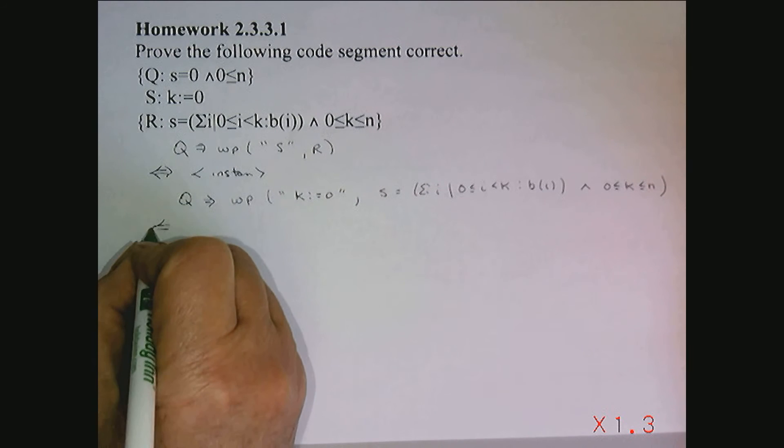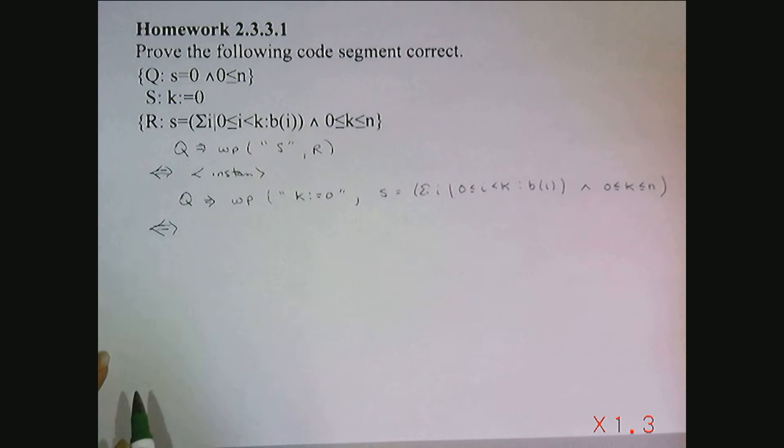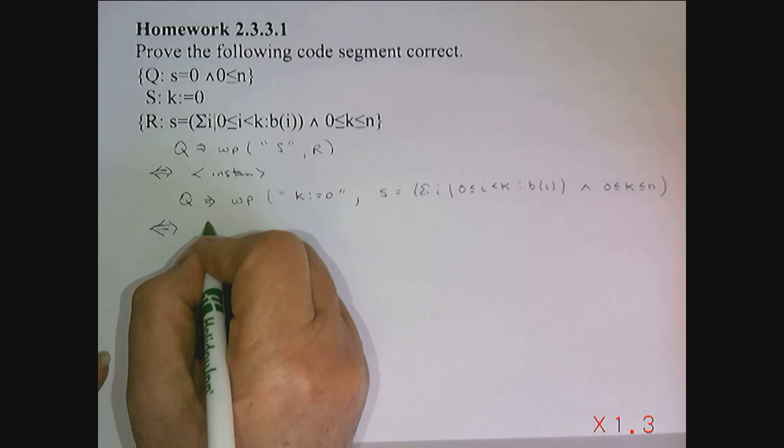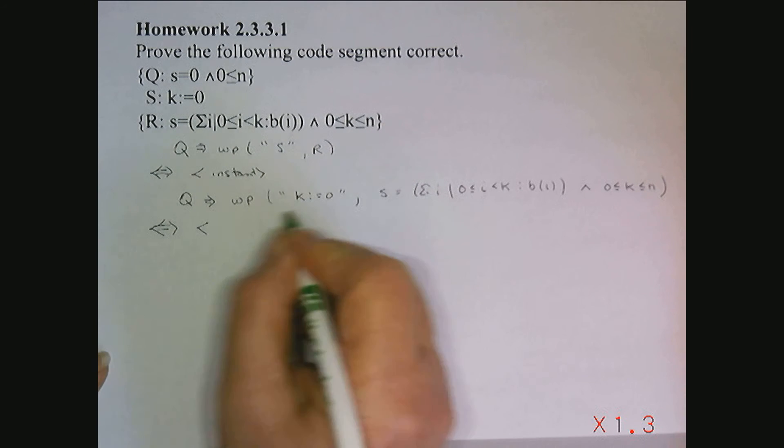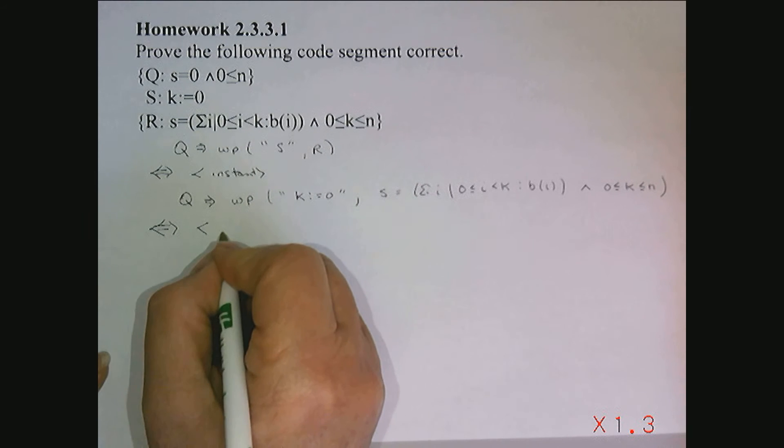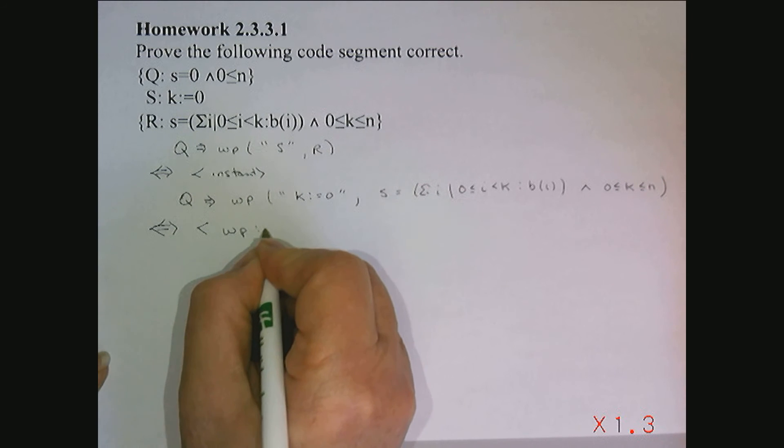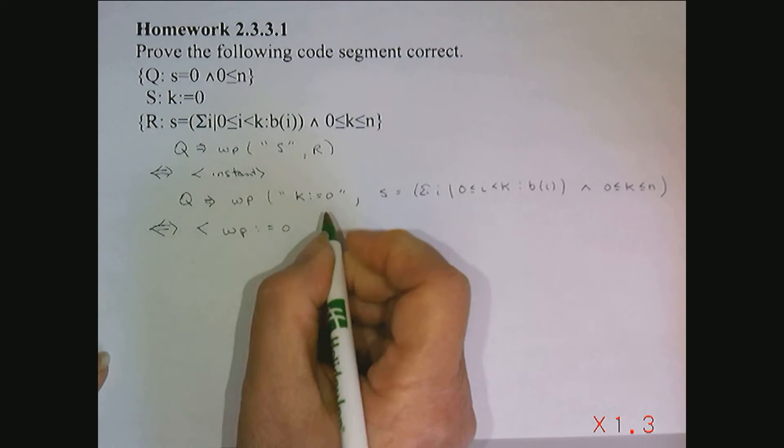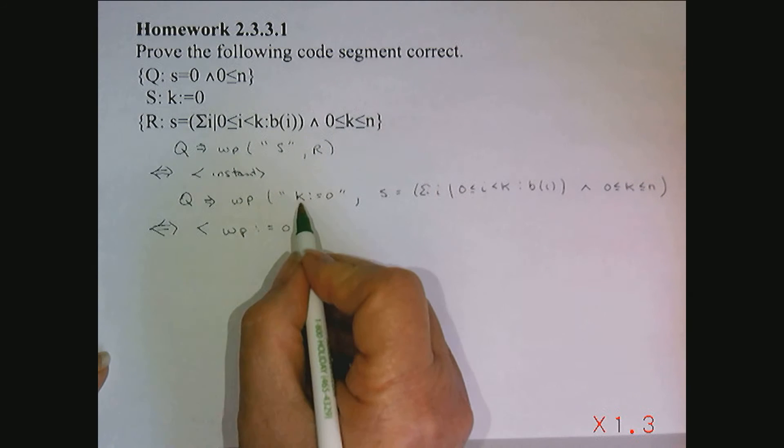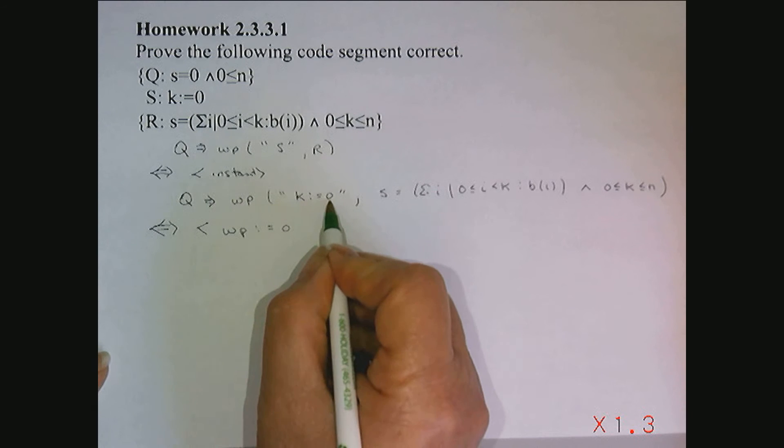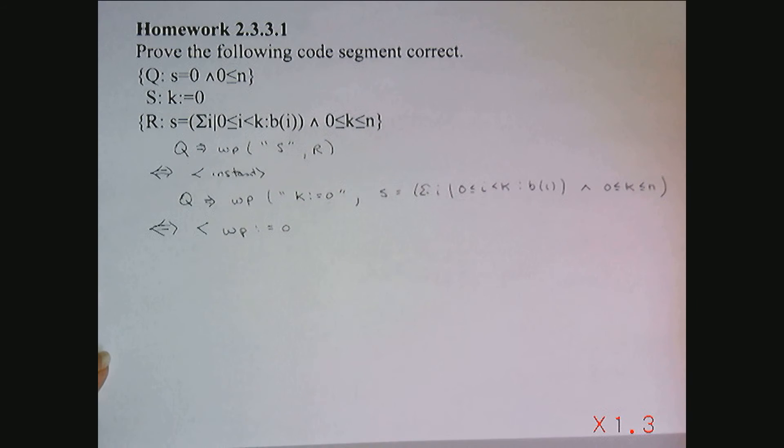Now, how do we find this weakest precondition? I'm going to do several steps at once. What I'm going to do is notice that this is an assignment, so I'm going to use the fact that when you find the weakest precondition of an assignment, you do a textual substitution for K of 0, but I'm going to actually do that textual substitution instead of writing it out.